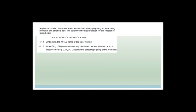A group of grade 12 learners are in a school lab preparing an ester using methanol and ethanoic acid. Write down the IUPAC name of the ester: methanol becomes methyl, and ethanoic acid becomes ethanoate — so the ester is methyl ethanoate. Now, 50 grams of impure methanol fully reacts with excess ethanoic acid and produces 68.8 grams of methyl ethanoate. Calculate the percentage purity of the methanol.